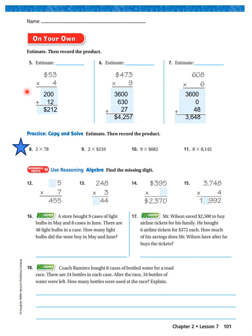We're going to do three more, and then you are going to work these down here on your own. I'm not going to worry about the estimate right now. All right. $53 times 4. 4 times 50 is 200. 4 times 3 is 12. My answer is $212. 473 times 9. 9 times 400 is 3,600. 9 times 7 is 630. 9 times 3 is 27. My answer is $4,257. 608 times 6. 6 times 600 is 3,600. 6 times 0 is 0. 6 times 8 is 48. My answer is 3,648.